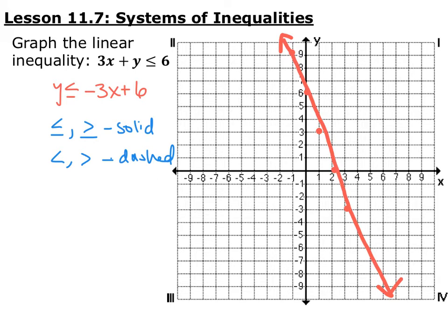Then you have to decide what side you're going to shade. Normally to do this, I plug in a point for x and y. If it solves the system, if it's a solution to the system, then you shade that side. If it's not a solution to the system, then you shade the other side. I usually pick 0, 0 unless the curve goes through that specific point.